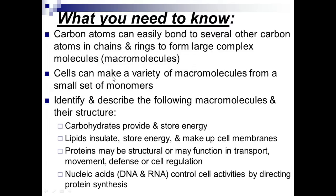What you need to know is that carbon atoms can easily bond to several other carbon atoms in a chain or a ring to form macromolecules. Cells can make a variety of macromolecules from a small set of monomers or building blocks.